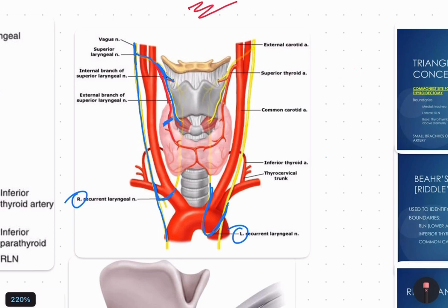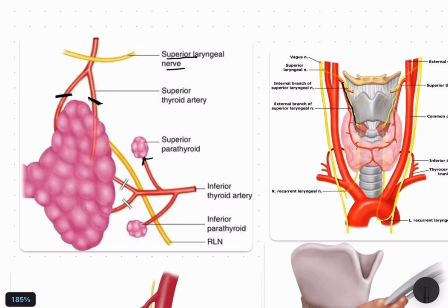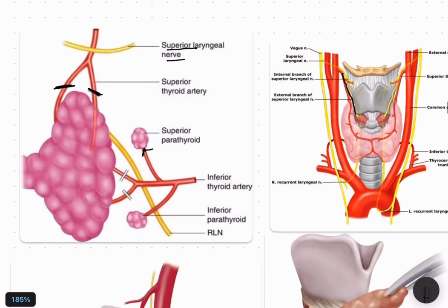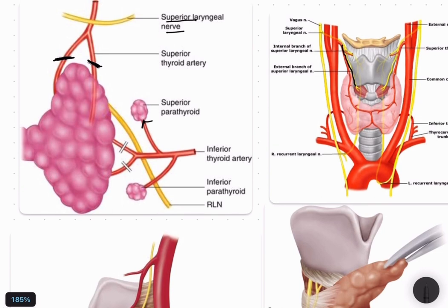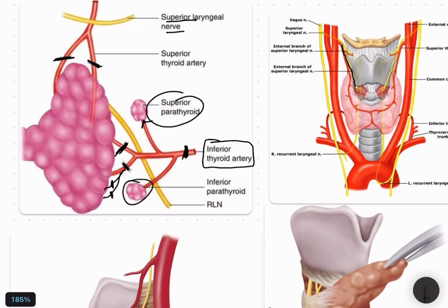Regarding ligation of the inferior thyroid artery: the inferior thyroid artery gives many capsular branches. You have to selectively ligate those capsular branches near the gland. If you do not ligate close to the gland, you will end up compromising the parathyroid glands as well. To prevent hypoparathyroidism and devascularization of the parathyroid glands, you must ligate specifically the capsular branches of the inferior thyroid artery.